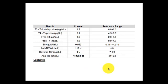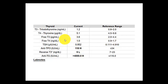Here we see a full thyroid panel. Total T3 is within range, and total T4 is also within range but on the lower end at 5.1. Free T3 is looking pretty good at 3.6, and free T4 is okay at 1.0 — a little on the lower end, but optimally we'd want to see about 1.1. TSH is just under the optimal range of 1 to 2, so not too bad. Both thyroid antibodies — antithyroid peroxidase antibodies and antithyroid globulin antibodies — are elevated. We'll also be looking at thyroid-stimulating immunoglobulins on a different video, which are the antibodies associated with Graves' disease.